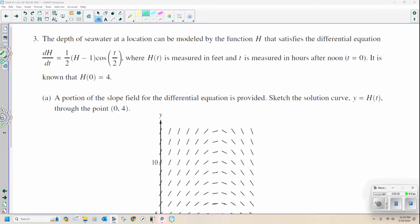Three reads, the depth of seawater at a location can be modeled by the function h that satisfies the differential equation dh/dt equals one-half times h minus one times a cosine of t over two. Where h of t is measured in feet and t is measured in hours after noon. Noon is at time t equals zero.